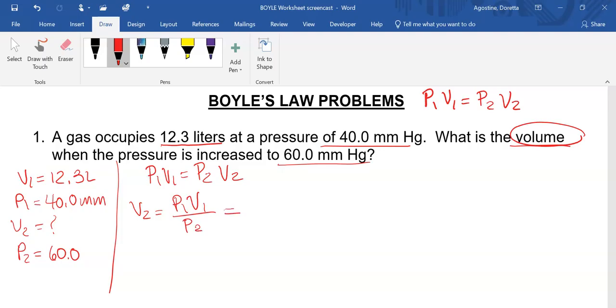So now we can put numbers in. So we're going to say P1 was 40.0 millimeters, and our V1 was 12.3 liters, and our P2 was 60.